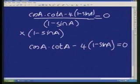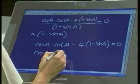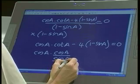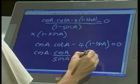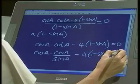Now I've got this cot a, and cos and sine, and what we do next is to try and write everything in terms of a common ratio, either cos or sine. I know that cot can be written as cos a over sine a, so that's minus 4 into 1 minus sine a, equals 0.